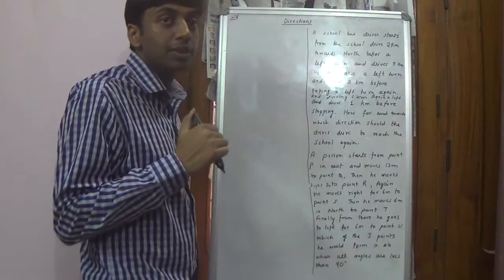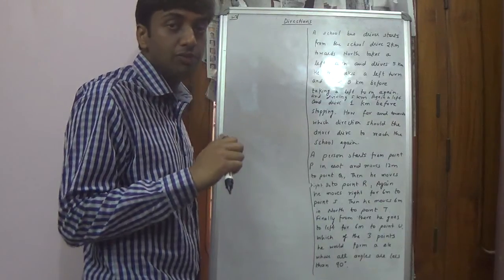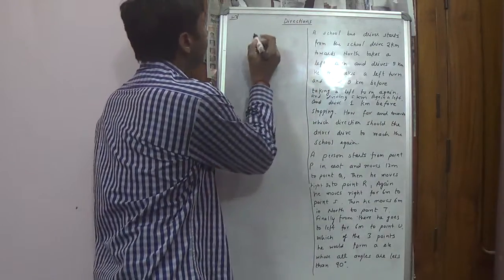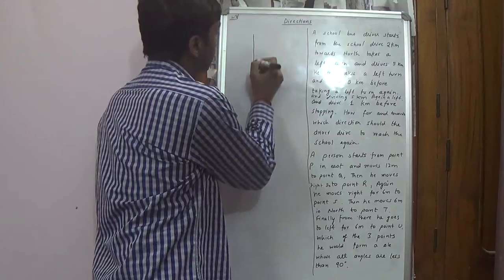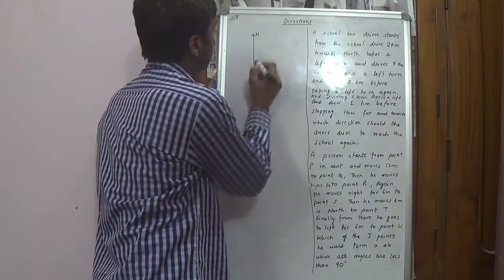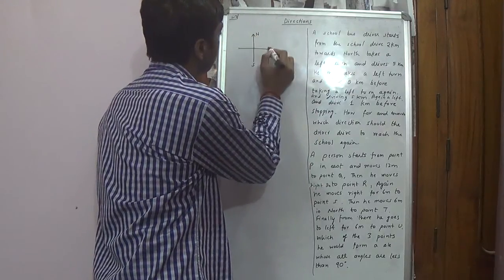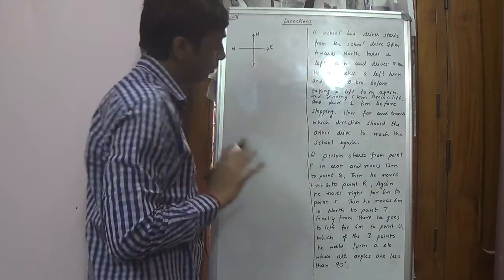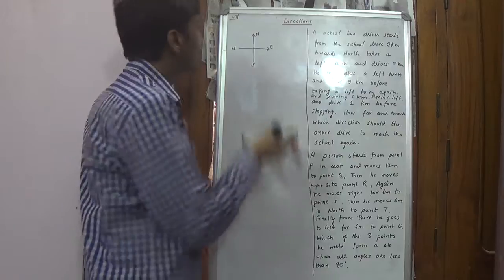As a concept, direction has only one concept which we have been knowing since our childhood, probably. This is north, this is south, this is east, this is west. This is the only concept we need to know in the Directions topic.